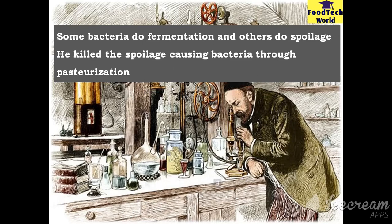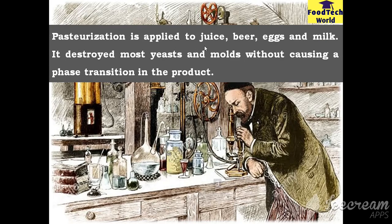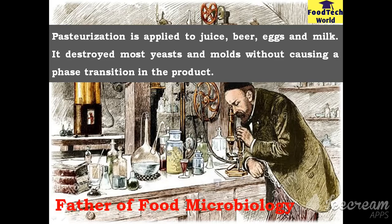Pasteur's simple solution was to heat the wine briefly to kill off the harmful bacteria so that the drink would not go bad so quickly. This idea later became known as pasteurization. Pasteurization was soon applied to beer, juice, eggs, and most famously milk. This process also proved successful at destroying most yeast and molds without causing a phase change in the food products.